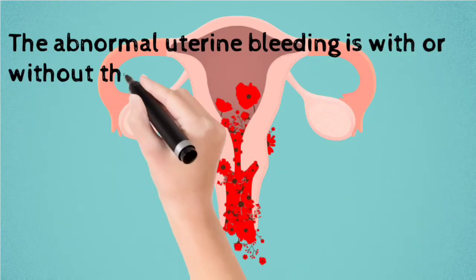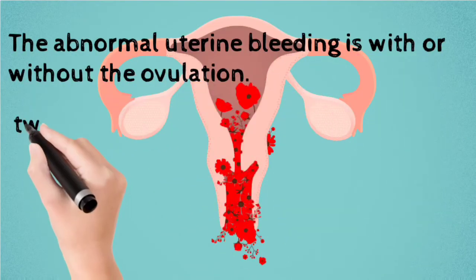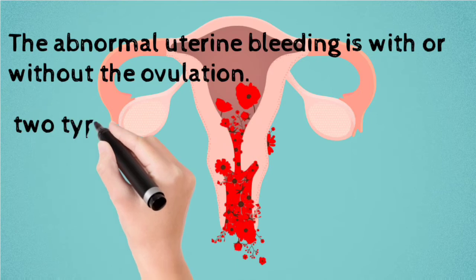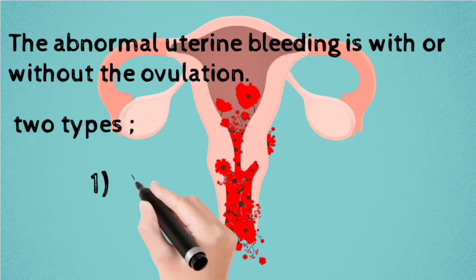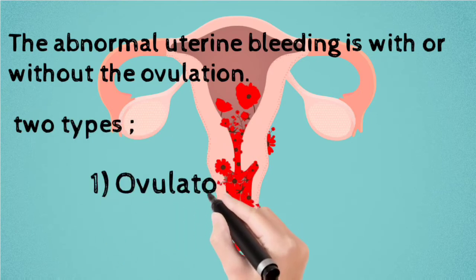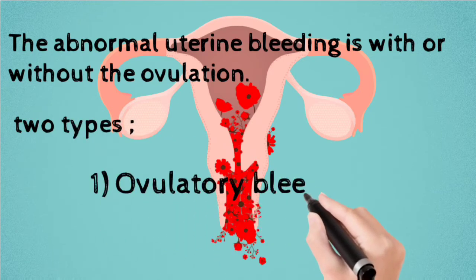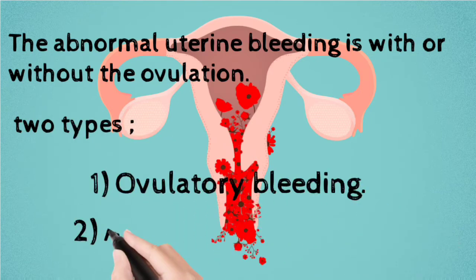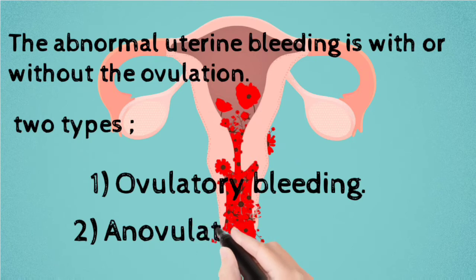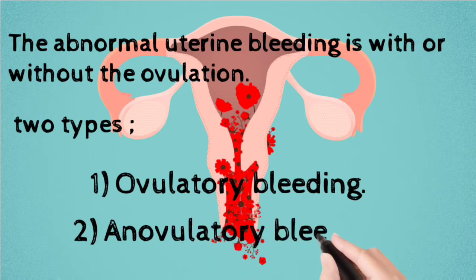Abnormal uterine bleeding may occur with or without ovulation. There are two types: first is ovulatory bleeding, and second is anovulatory bleeding.